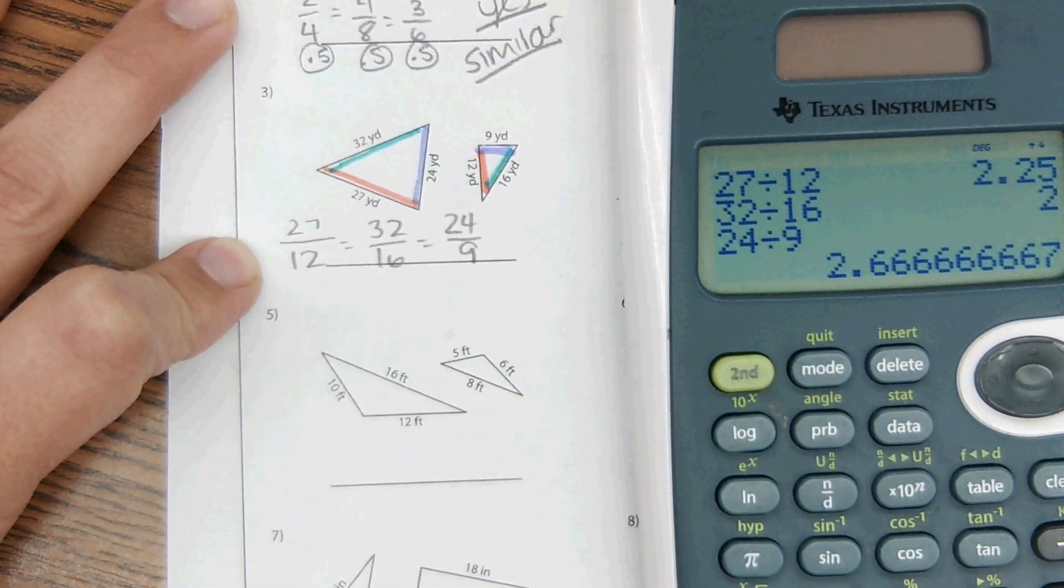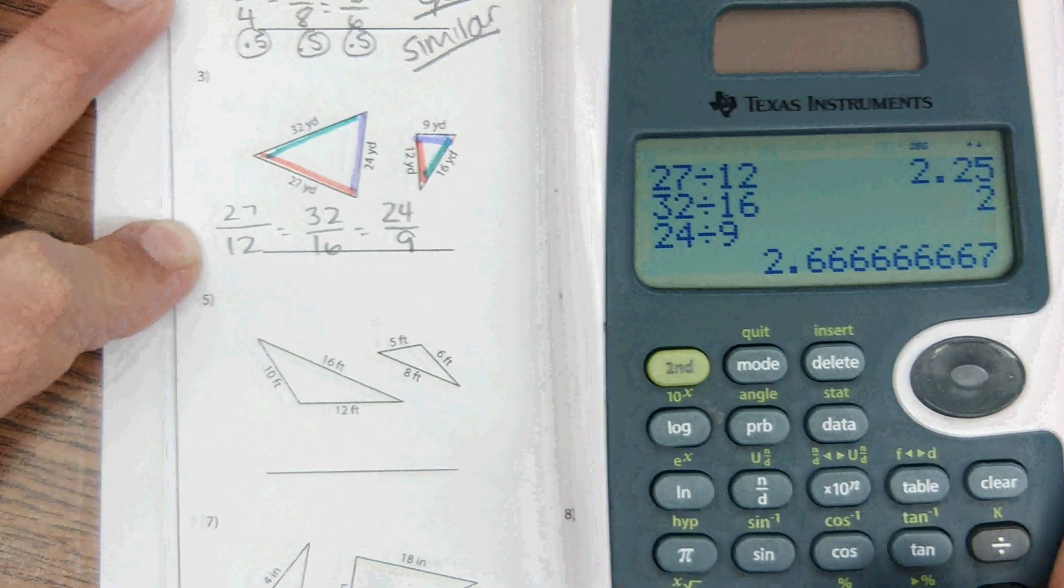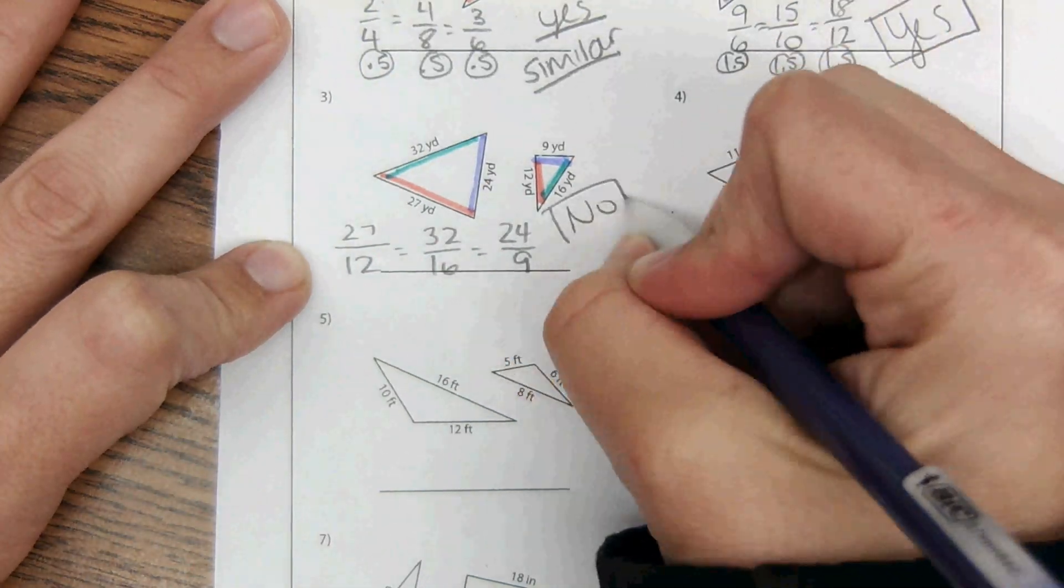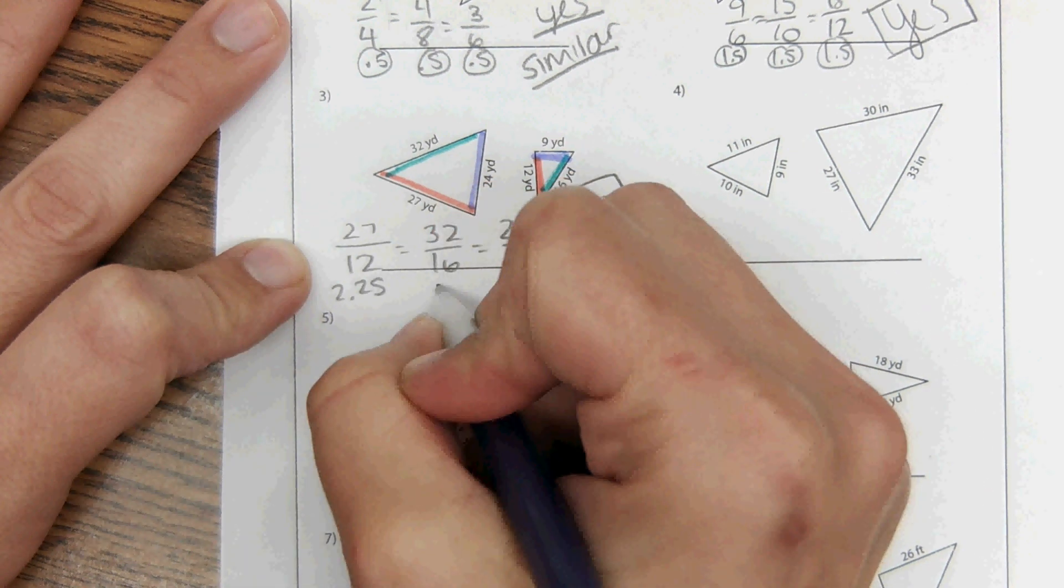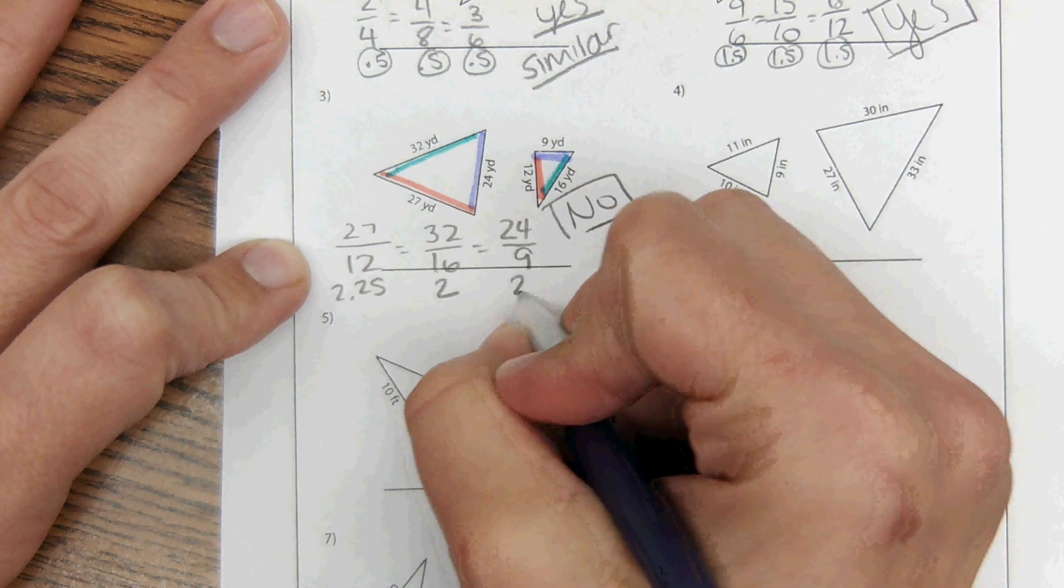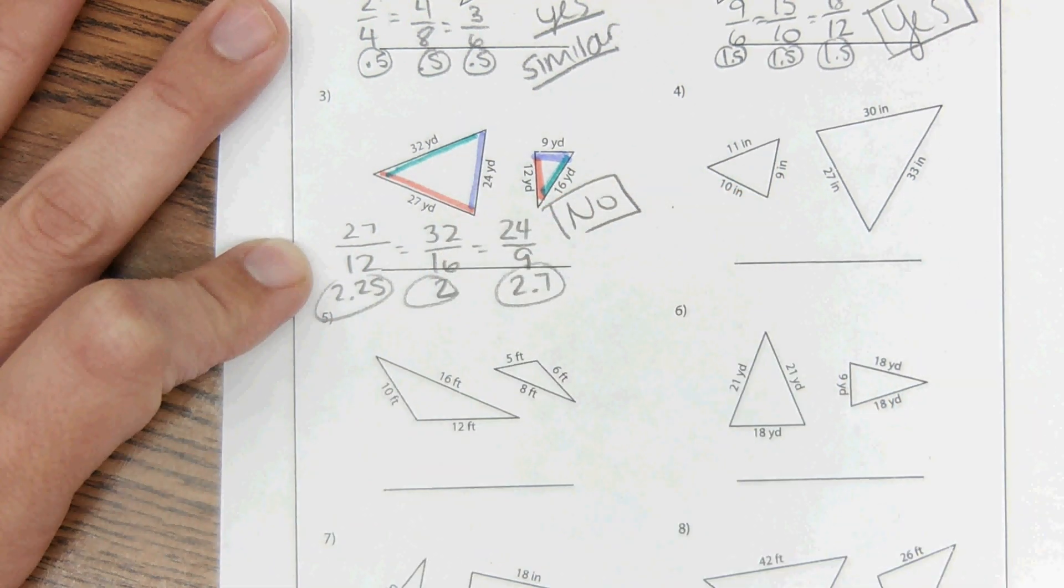So, 27 divided by 12, 32 divided by 16, and 24 divided by 9. With this one, it came out to all different numbers, different decimals. So, therefore, this is going to be a no. So, this came out to 2.25. This came out to 2. This came out to 2.7. So, it's a no.